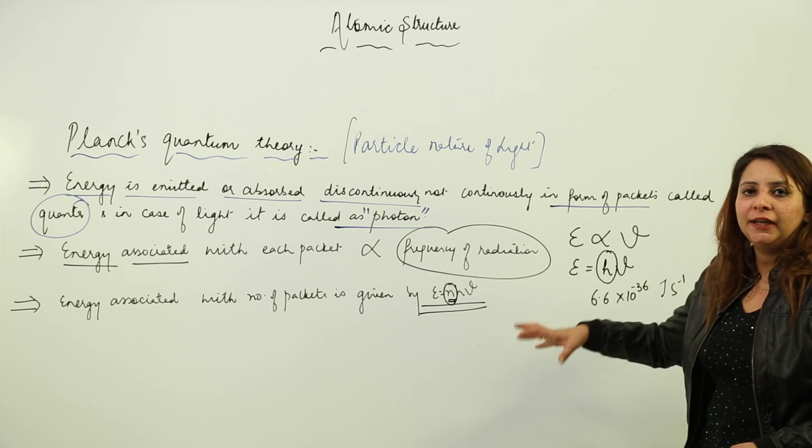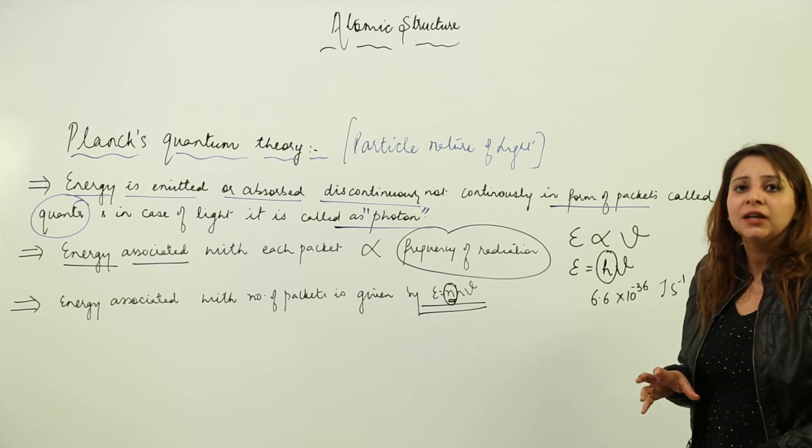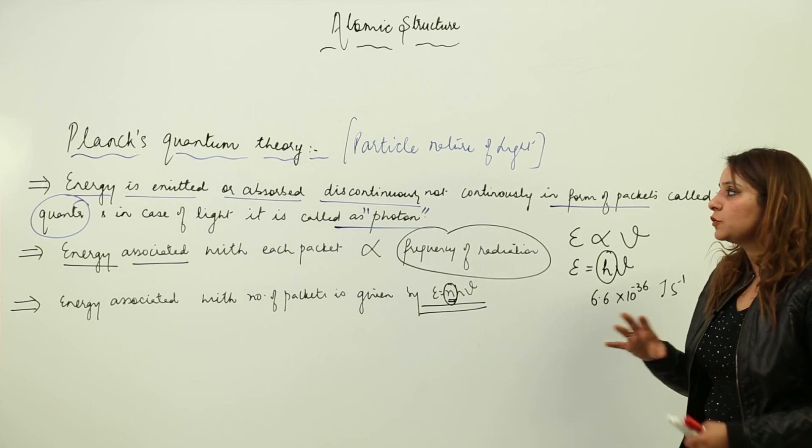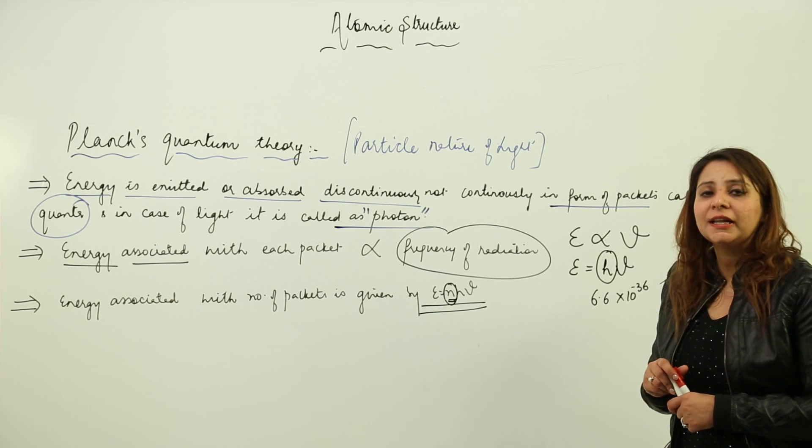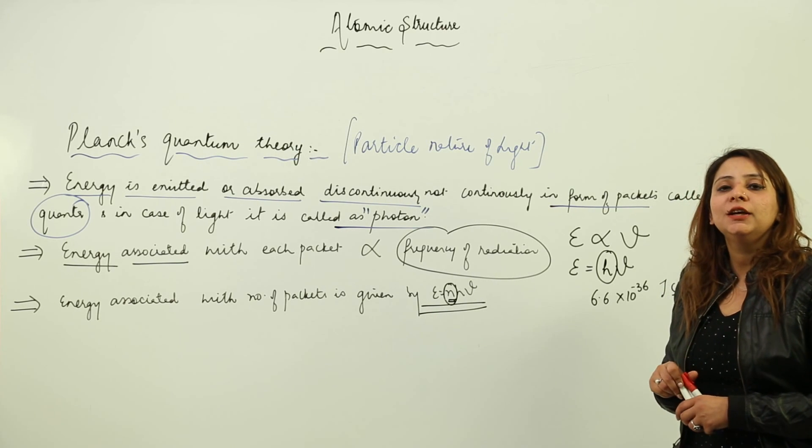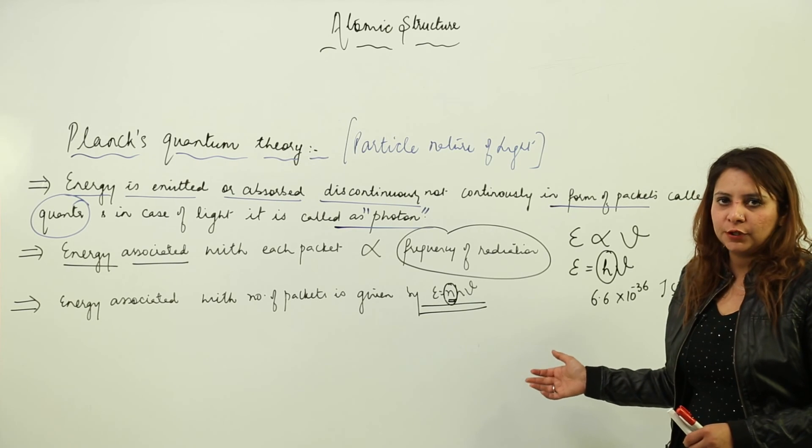This theory can explain the particle nature of light. Now we'll try to explain those phenomena which could not be explained by electromagnetic wave theory - that is the blackbody radiation and the photoelectric effect - on the basis of Planck's quantum theory.